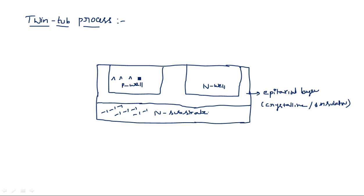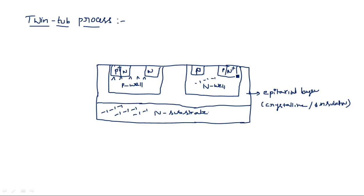In the P-well region, we have diffusion of P-type on both sides, and in the N-well we have N-type on one side and P-type on the other. The outer regions are P-plus and N-plus contacts. The N-plus region acts as the substrate contact for the N-well transistor, and the P-plus region acts as the substrate contact for the P-well. These contacts serve as the source terminals for their respective transistors.